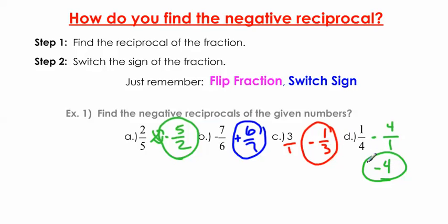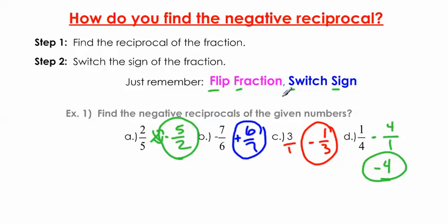If you're given a whole number and want to find the negative reciprocal, you'll always end up with a fraction. And if you start with a fraction that has a 1 on top, you'll always end up with a whole number. The steps for negative reciprocal are: flip fraction and switch sign — F and S. If you can remember just those four words in order, you should be fine on these problems.